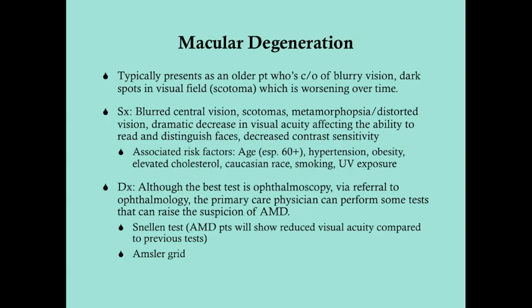The symptoms are blurred central vision, scotomas, and metamorphopsia — where straight lines appear curvy or distorted. Patients also have a dramatic decrease in visual acuity of at least two levels on the Snellen chart, affecting their ability to read and to distinguish faces. They also have decreased contrast sensitivity when viewing colored objects.